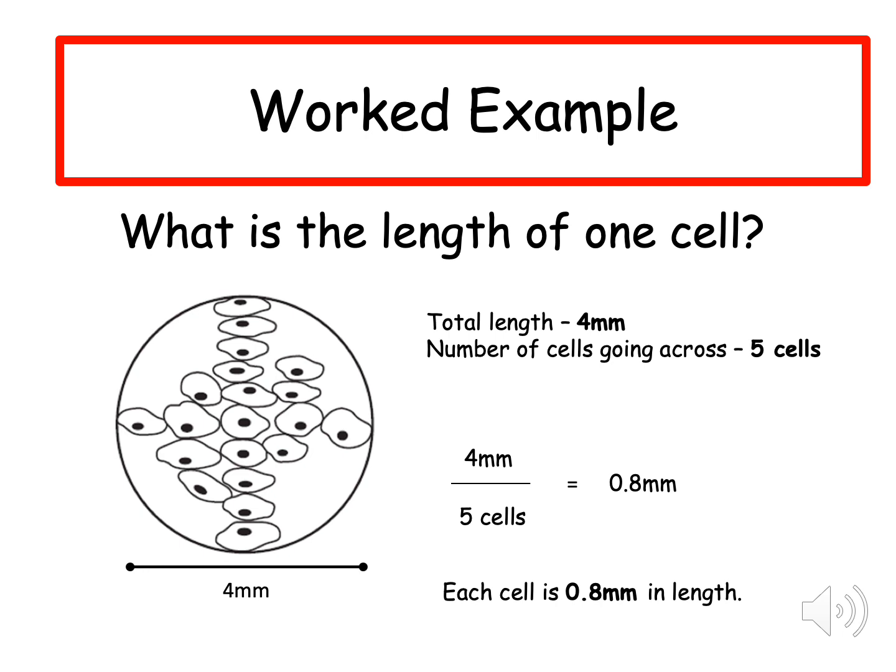So what you should have hopefully worked out is the total length is four millimeters. It gives you that in the diagram. The number of cells going across is five cells. So you just count one, two, three, four, five. Four millimeters need to be divided by those five cells and that gives you an answer of 0.8 millimeters. This means that each cell is 0.8 millimeters in length.